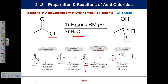A second equivalent of Grignard then adds to the ketone intermediate, giving a tertiary alkoxide. The last step is a simple quench. You always get a tertiary alcohol — the same result as with esters. Your job is to keep it all straight.